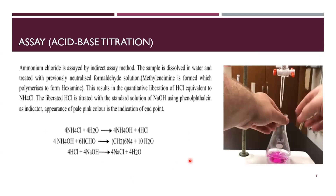The assay of ammonium chloride is done by two methods: the Volhard method and the indirect assay method. In the indirect method, the sample is dissolved in water and neutralized with formaldehyde solution, yielding methylene amine which polymerizes to hexamine. This results in quantitative liberation of HCl equivalent to NH4Cl. The liberated HCl is titrated with standard NaOH solution using phenolphthalein as indicator, giving a final endpoint of pale pink color. This is an acid-base titration method.